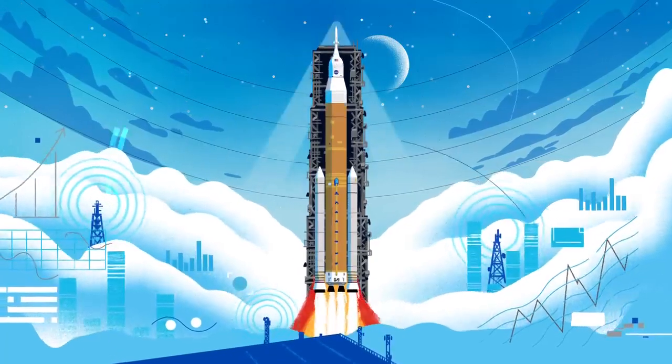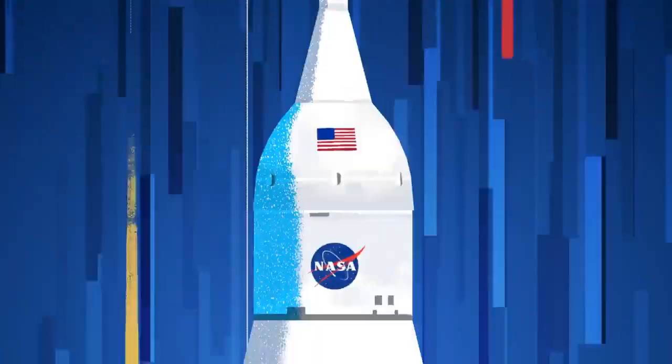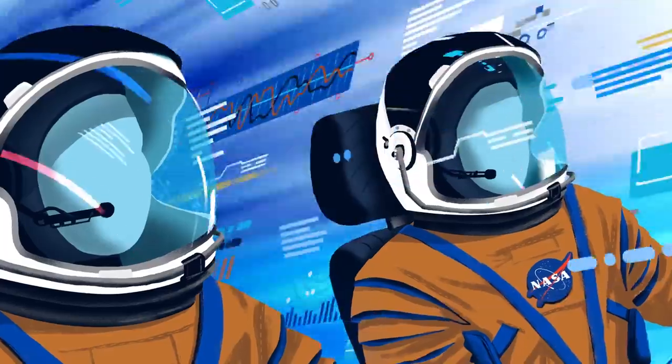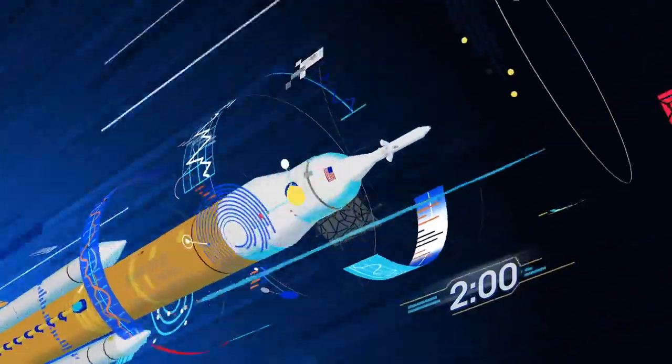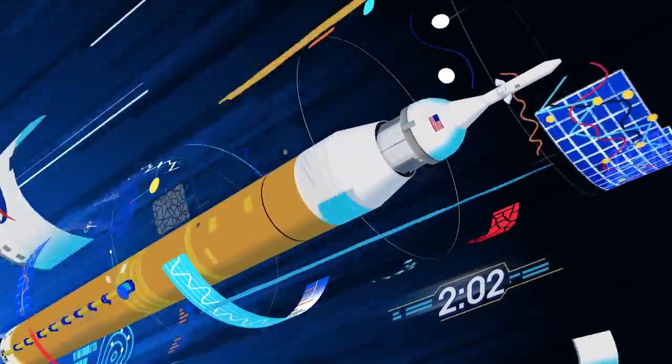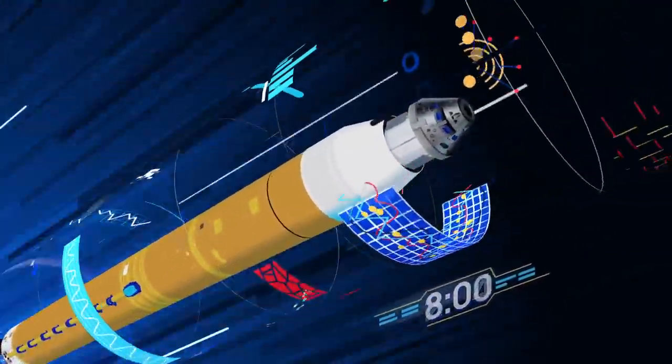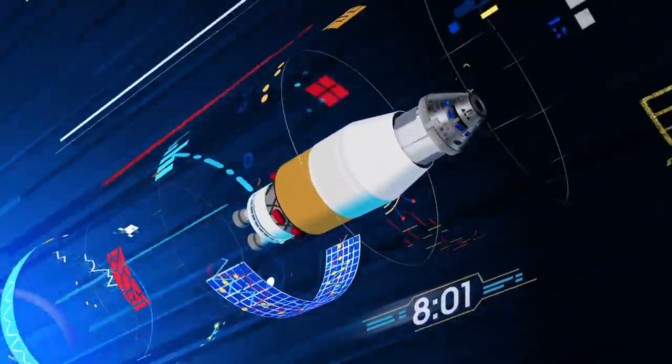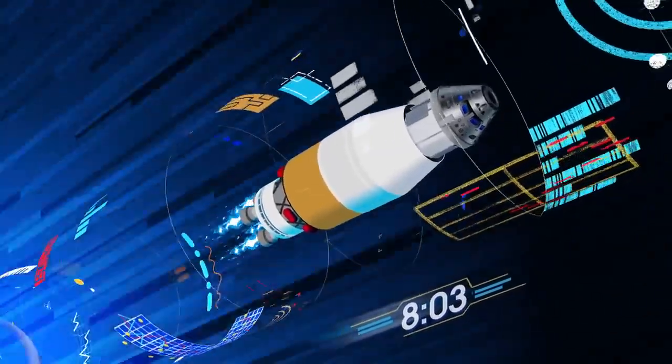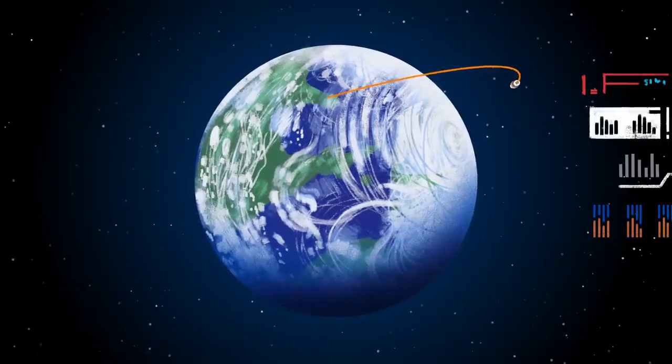All four RS-25 engines and the two solid rocket boosters come to life, thundering our crew upwards. Two minutes after ignition, the solid rocket boosters are spent and released. Eight minutes after launch, the core stage is depleted and separated. The upper stage fires briefly, placing Orion into a parking orbit around the Earth.